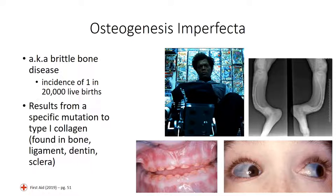The condition results from one of a number of specific mutations to the type 1 collagen protein. This collagen isoform is expressed abundantly in bone and ligament, as well as in teeth and the sclera of the eye. As we noted with Ehlers-Danlos Syndrome, the tissues with the greatest abundance of the affected protein will also show the greatest degree of pathology, which is also the case here.